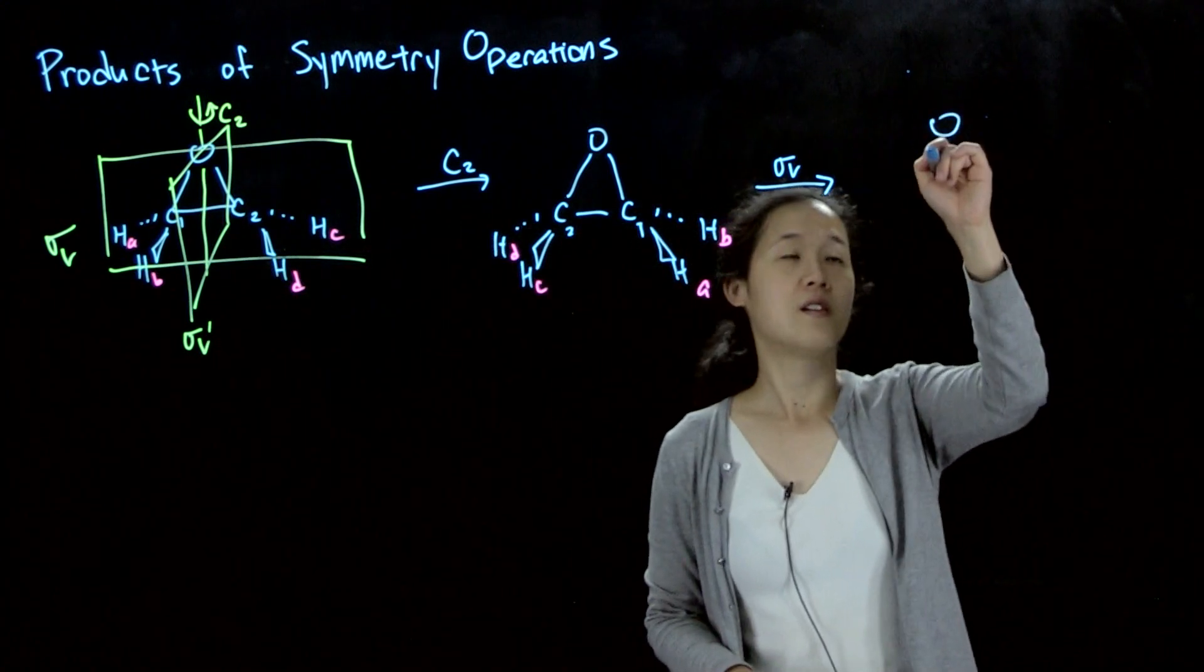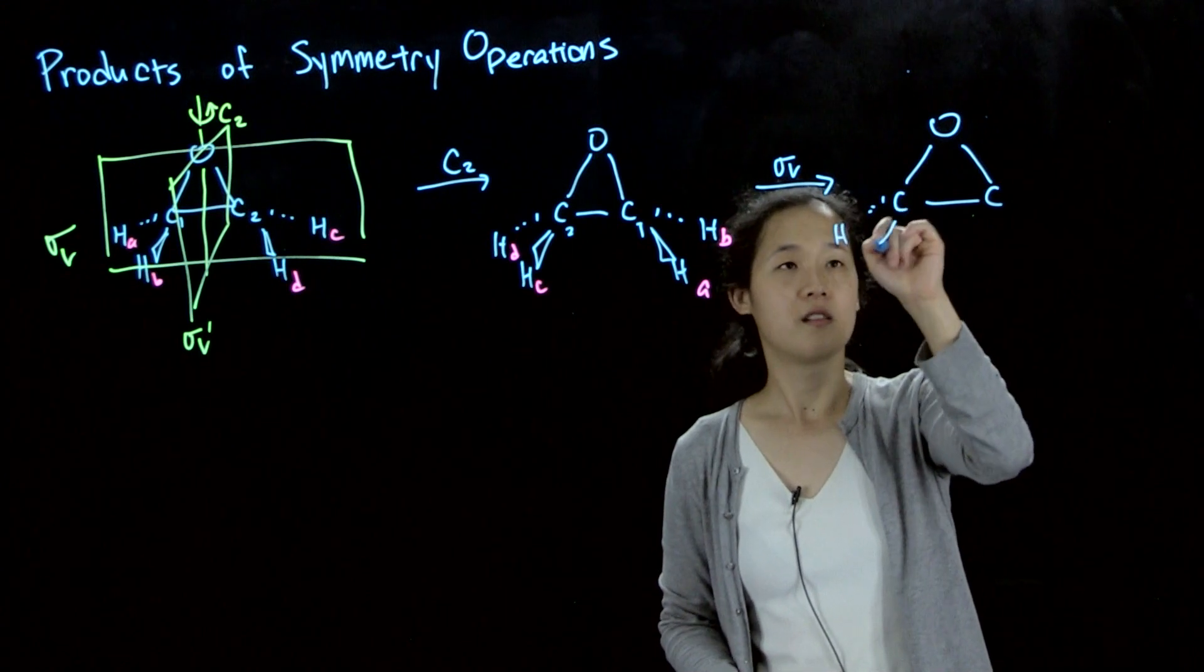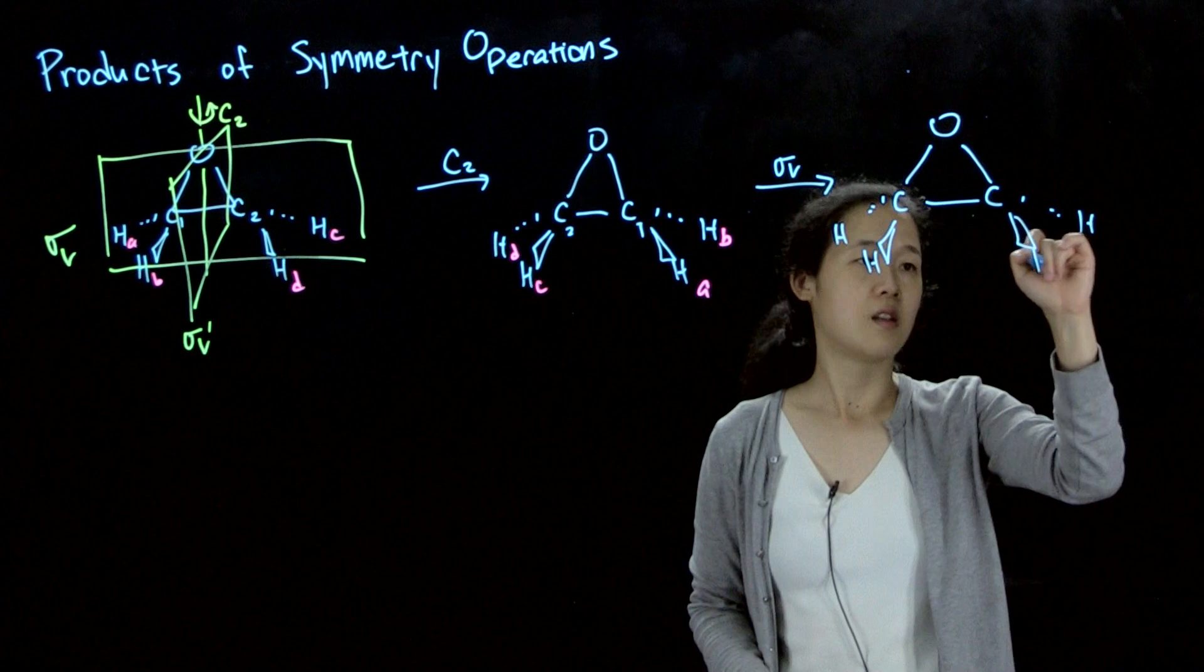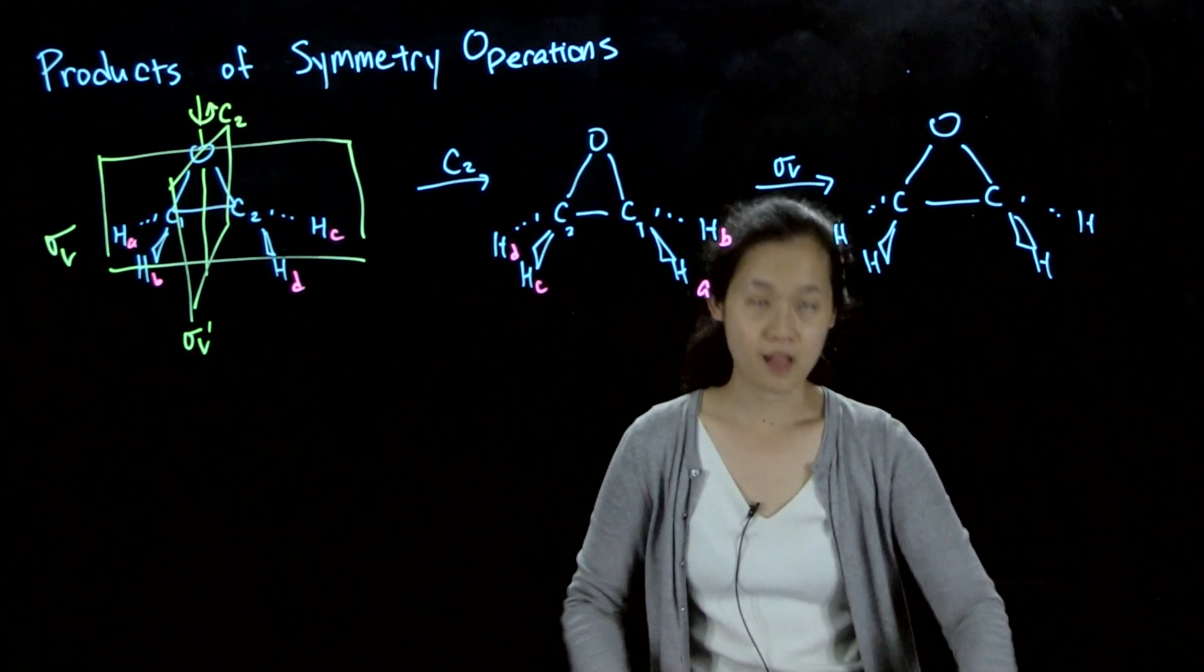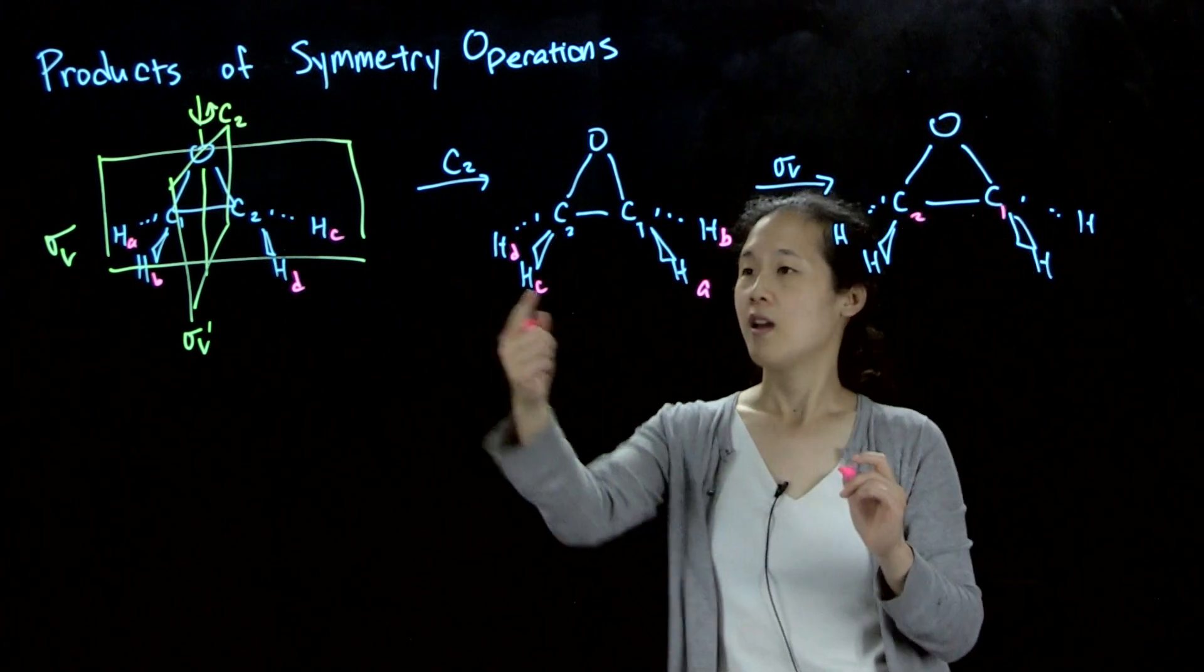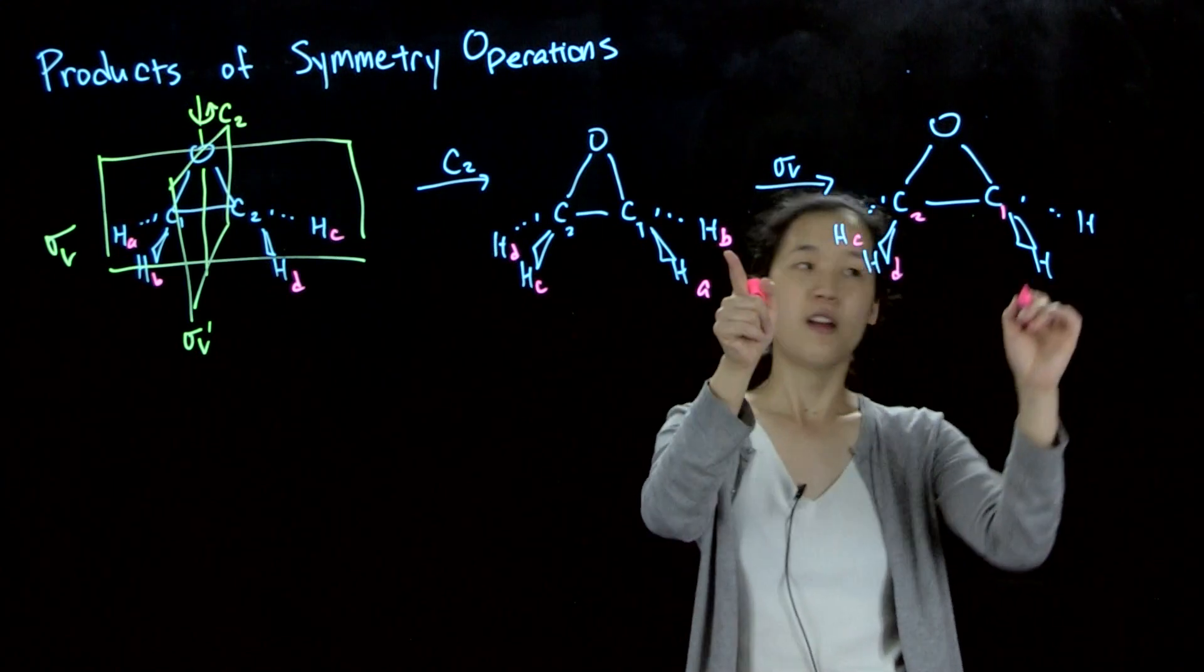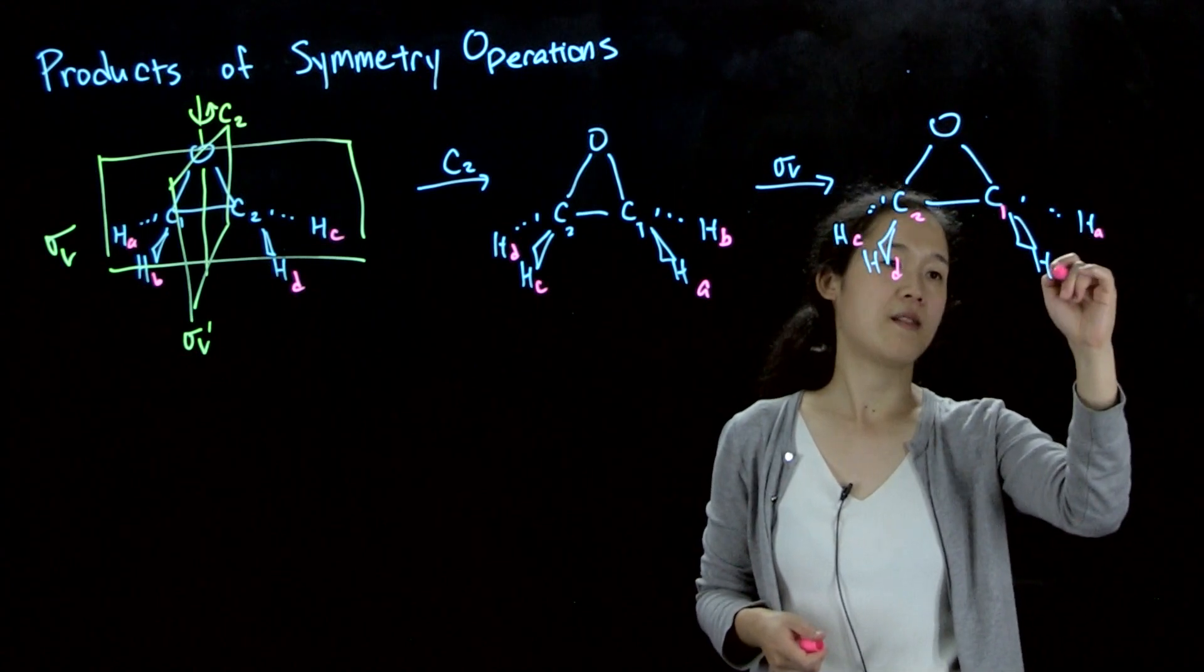If we redraw our ethylene oxide, we've mirrored from this spot in the plane of the board. So if we look at our labels, C2 and C1 are in the mirror plane, so they don't move. This is still C2, this is still C1. But C and D have to switch. So this becomes D, this becomes C, and B and A switch, because we're mirroring in the plane of the board.